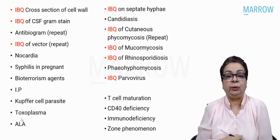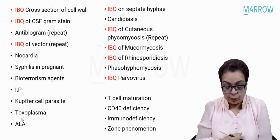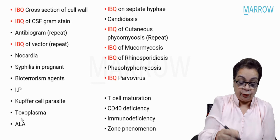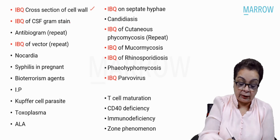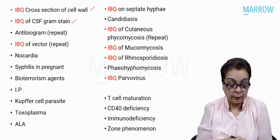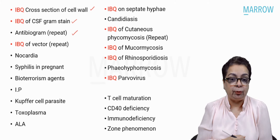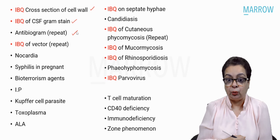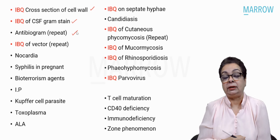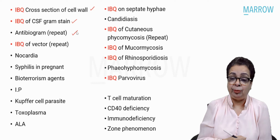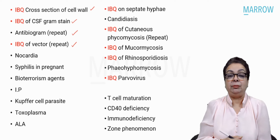Let's quickly go through the topics that were asked. We had a few image-based questions, about six or seven. We had a question from the cross-section of the cell wall of a bacterium, an image-based question of CSF gram stain of a patient with meningitis, and a question where a bacteria's antibiogram profile was given and we were asked to identify the organism. This was a real bouncer, though it is a repeat — asked about seven years back in the AIIMS exam.